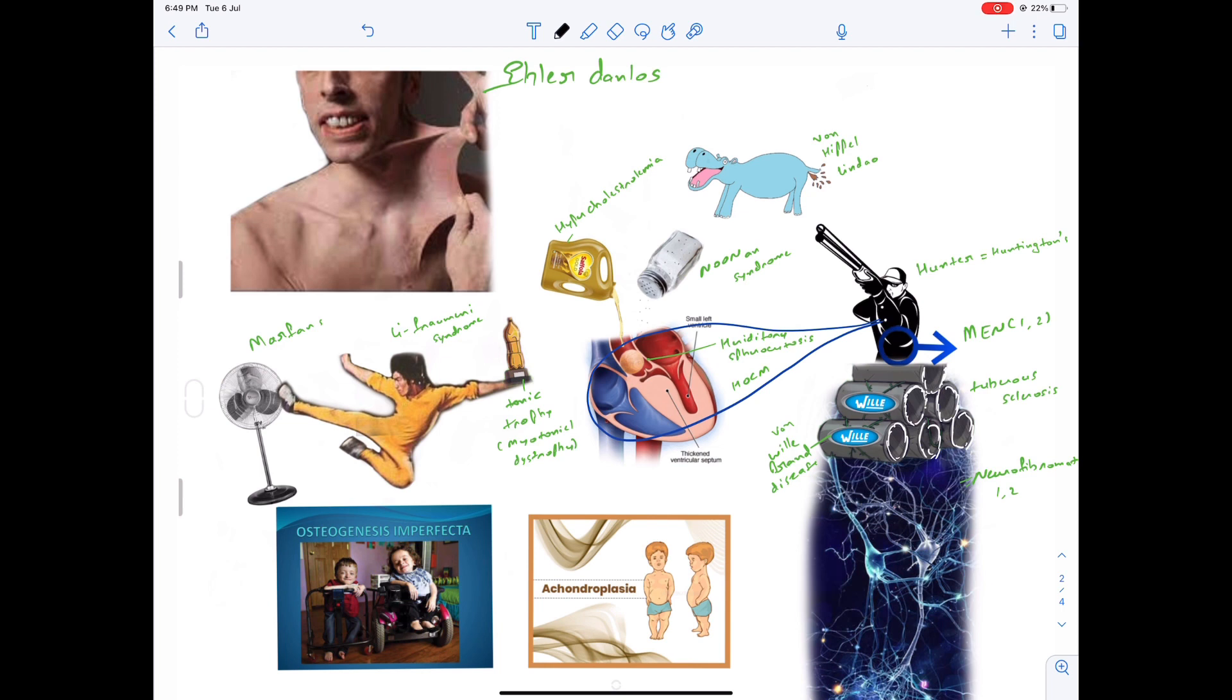Here is a very short story on autosomal dominant diseases. In this pictorial mnemonic, three diseases you have to mug up: first, childhood animals; second, osteogenesis imperfecta; and third, achondroplasia. I couldn't find any way to add them up in the story.